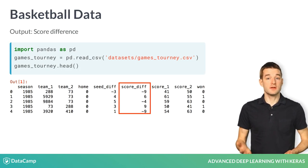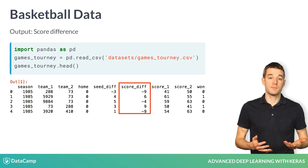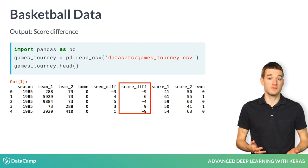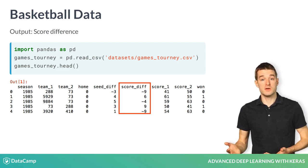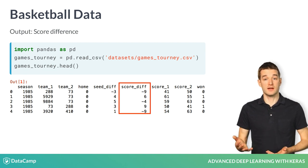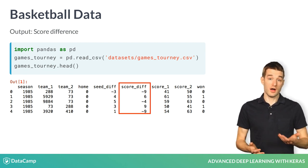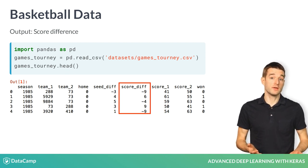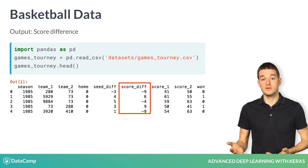Your output will be the difference in score between the two teams. For example, if team 1 scores 41 points and team 2 scores 50 points, the score difference is 41 minus 50, or negative 9. On the other hand, if team 1 scores 61 points and team 2 scores 55 points, the score difference is 61 minus 55, or positive 6.